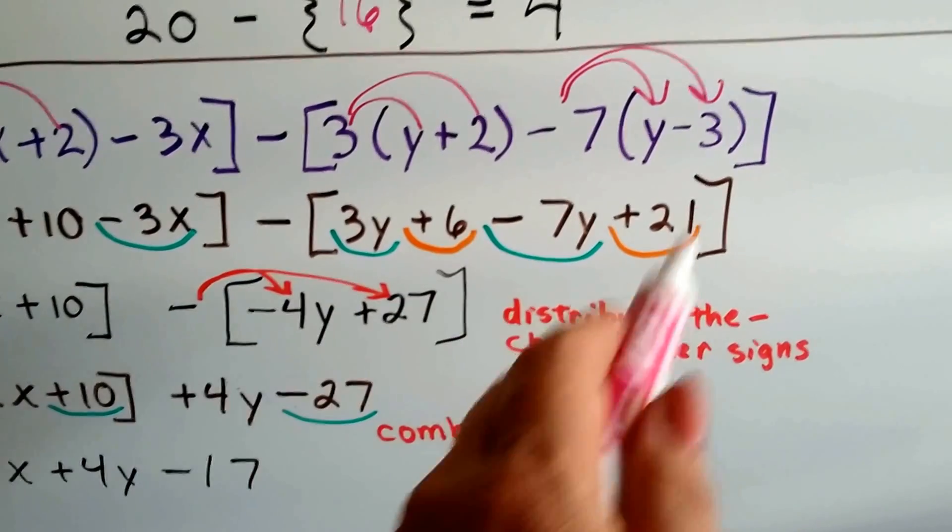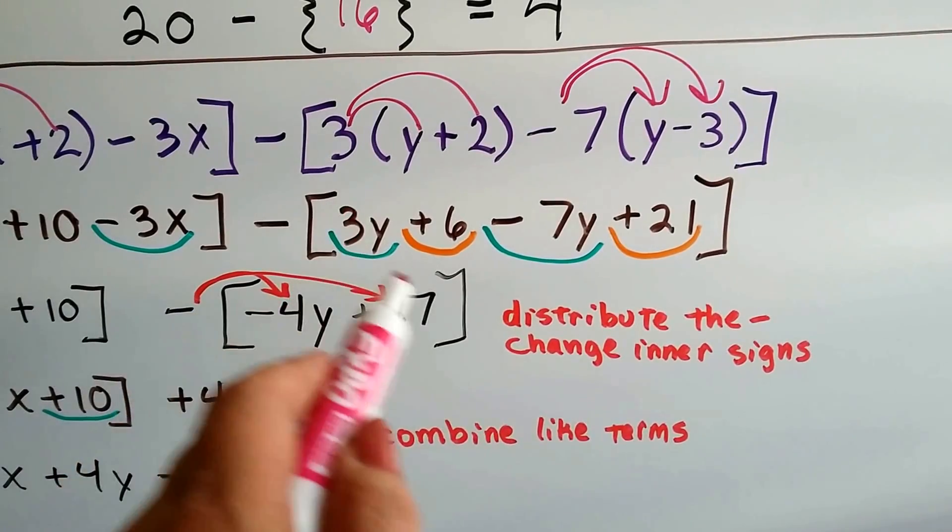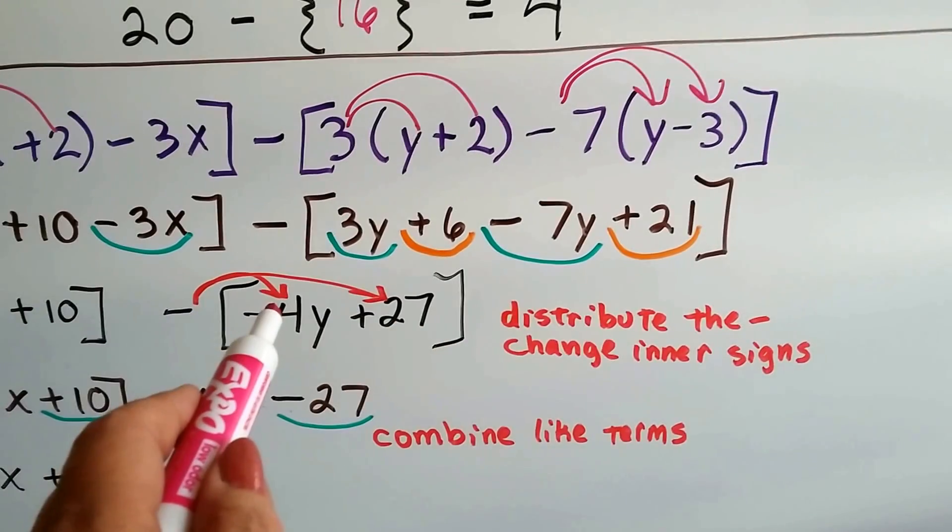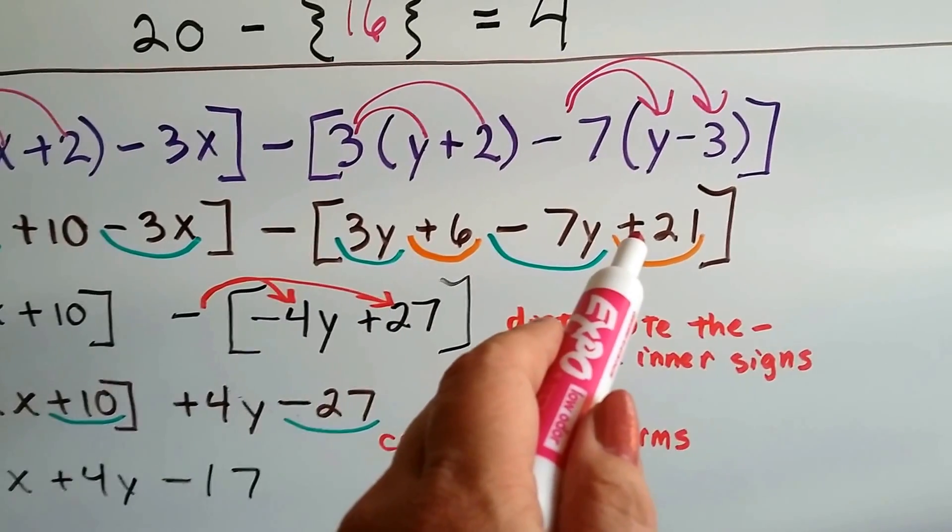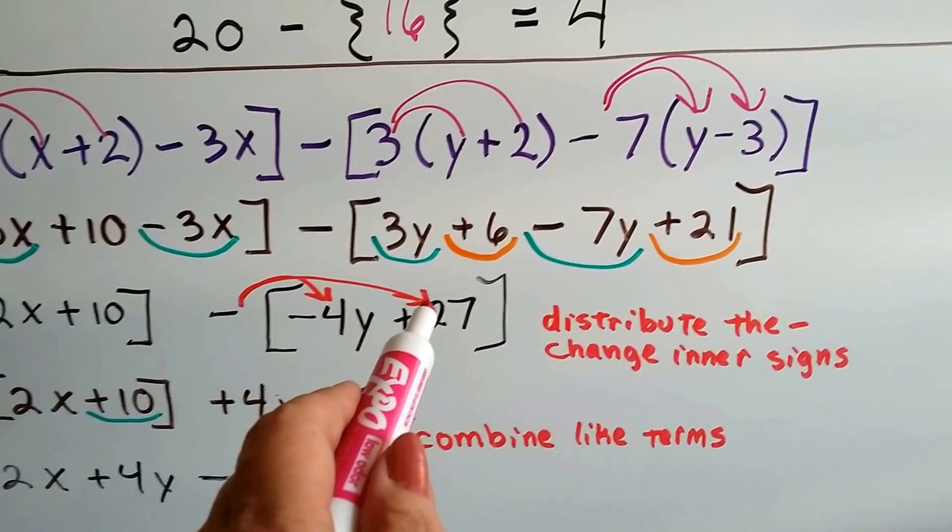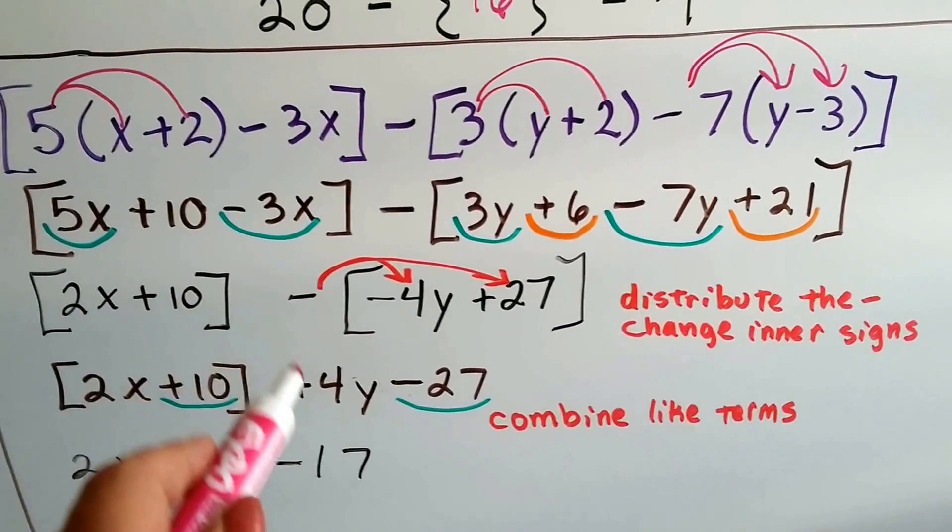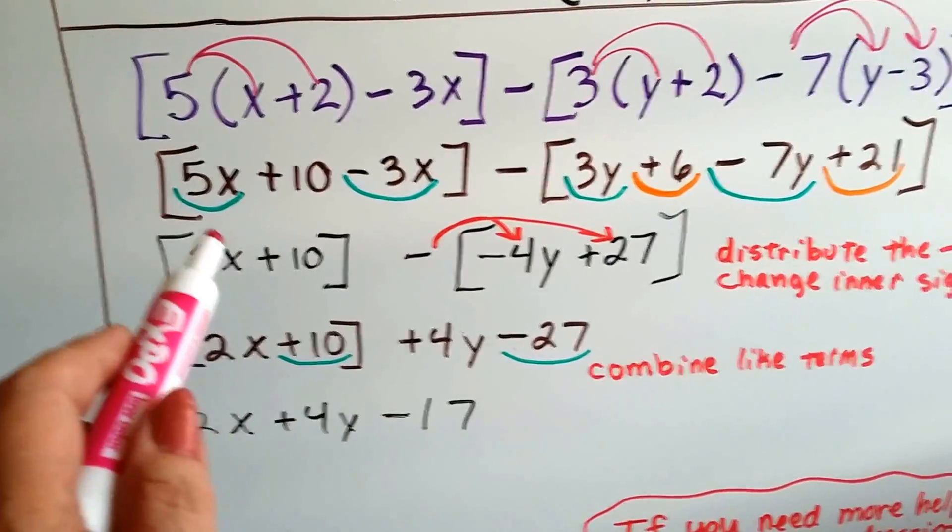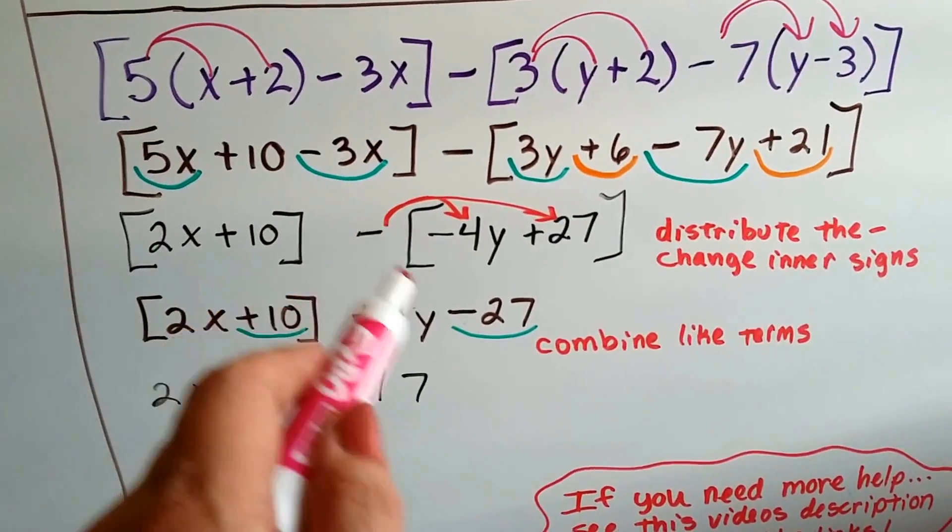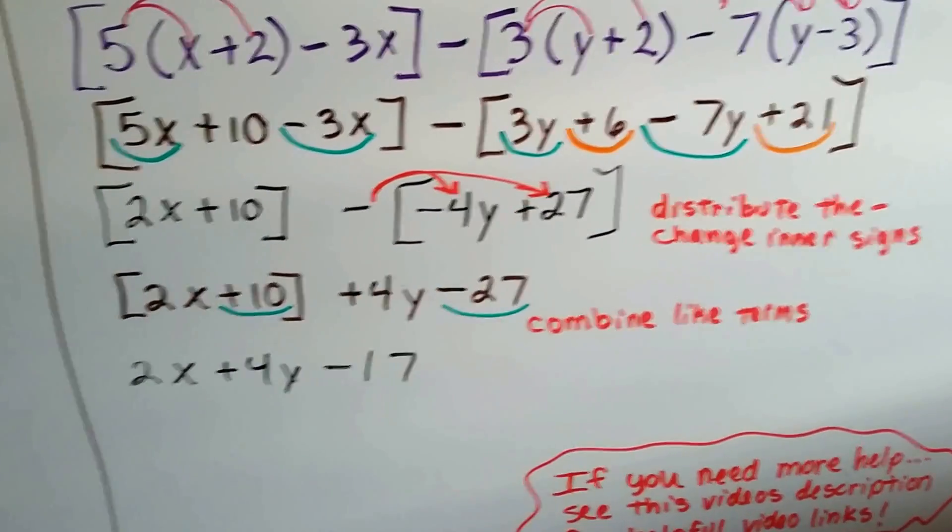So now we've got 3y plus 6 minus 7y plus 21. We've got like terms. The greens are alike. The oranges are alike. The green is 3y minus 7y. That gives us a negative 4y. And a positive 6 plus a 21 gets us a positive 27. We drop our minus sign down in between these two brackets.